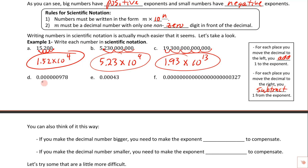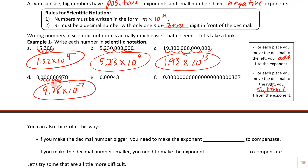For small numbers, the decimal starts here and we need one non-zero digit in front. Zeros don't count, so we keep moving — one, two, three, four, five, six, seven places — giving us 9.78 times 10 to some power. Since we're representing a small number, we use a negative exponent. We moved seven places, so this is 9.78 times 10 to the negative 7. Thinking of it as starting from 10 to the zero and subtracting seven: zero minus seven is negative 7.